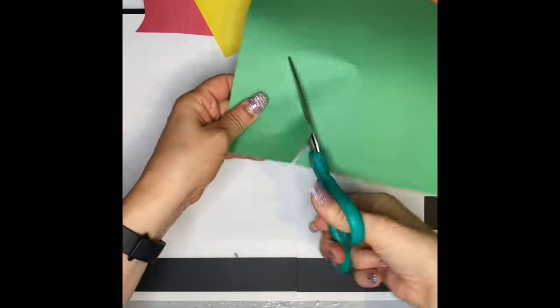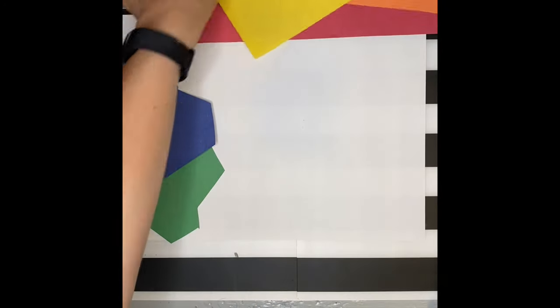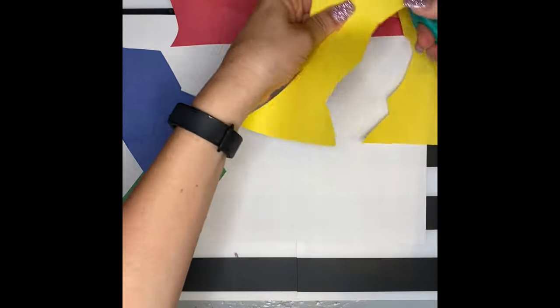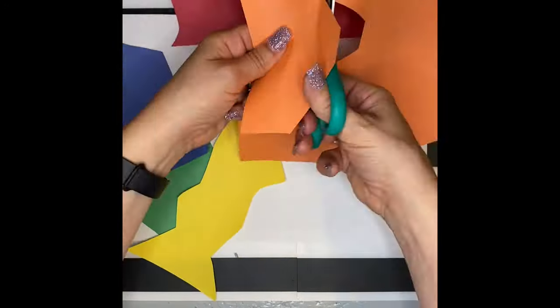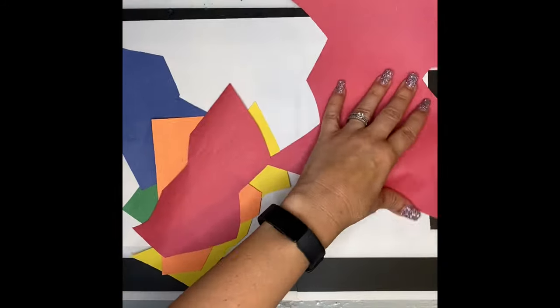First you're going to begin by cutting out some abstract shapes or freeform shapes. Try to use as many different colors as you can. Don't worry about trying to make a shape look like something as Matisse often did a lot of freeform shapes. Use the edges of the paper for straight edges if you like. I'm using all the colors of the rainbow.